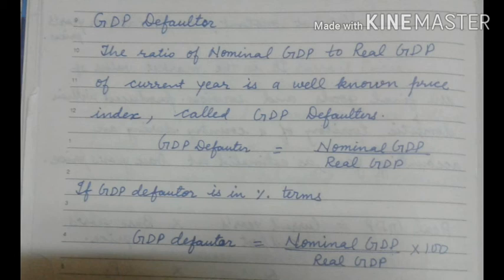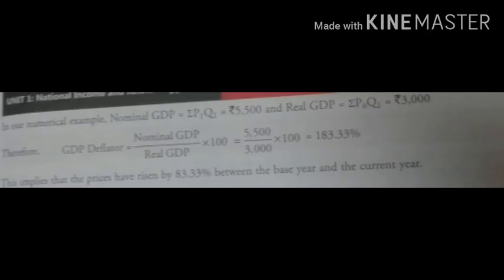In our next video, we will solve numericals based on real GDP and nominal GDP so that you may understand the concept thoroughly. Using our numerical example: Nominal GDP (ΣP1Q1) = Rs. 5500 and Real GDP (ΣP0Q1) = Rs. 3000. Therefore, GDP deflator = (5500 ÷ 3000) × 100 = 183.33%.